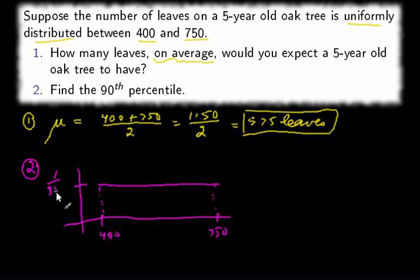So the height is 1 over 350. And we want the 90th percentile. That means we pick a place where 90% of the area under the graph is to the left of that value. Call that x. That's what we're looking for. We're looking for this number x that is to the right of 90% of the graph.